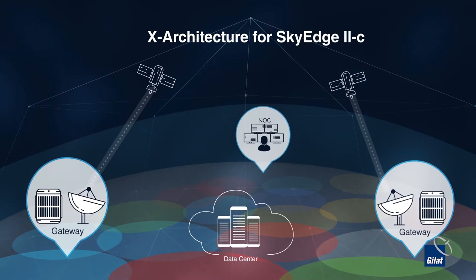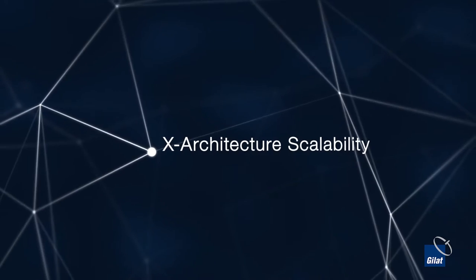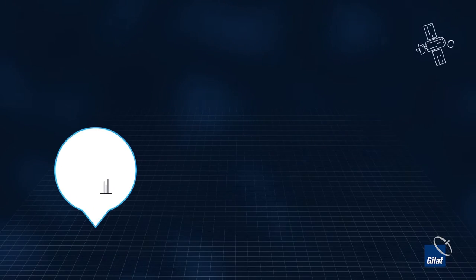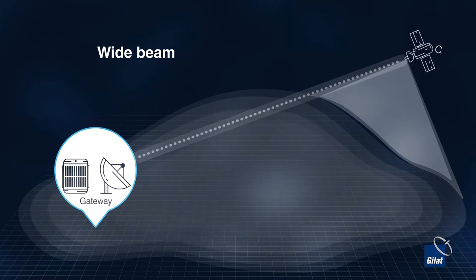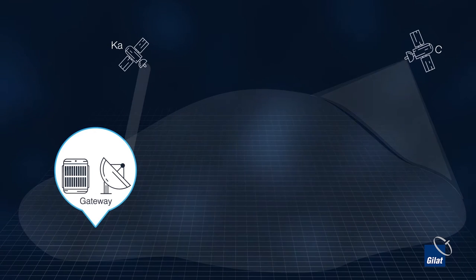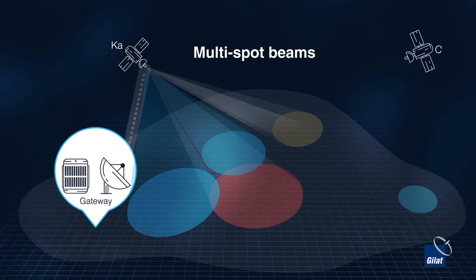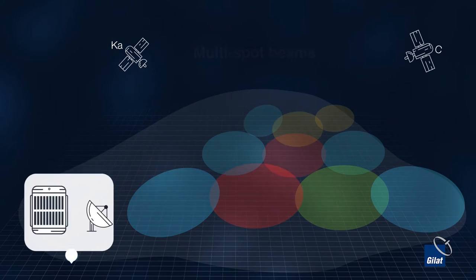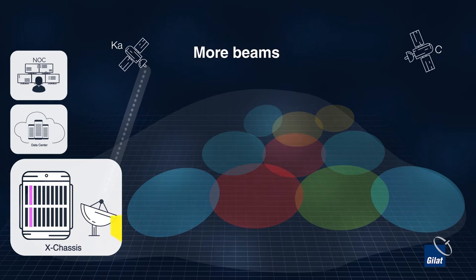With Gilat's X-Architecture, as your business grows, you can provide broader coverage and increase bandwidth. Your needs can be served by either traditional wide beam satellites or by HTS multi-spot beam satellites. To add bandwidth, simply insert, transmit, and receive cards into your hub.